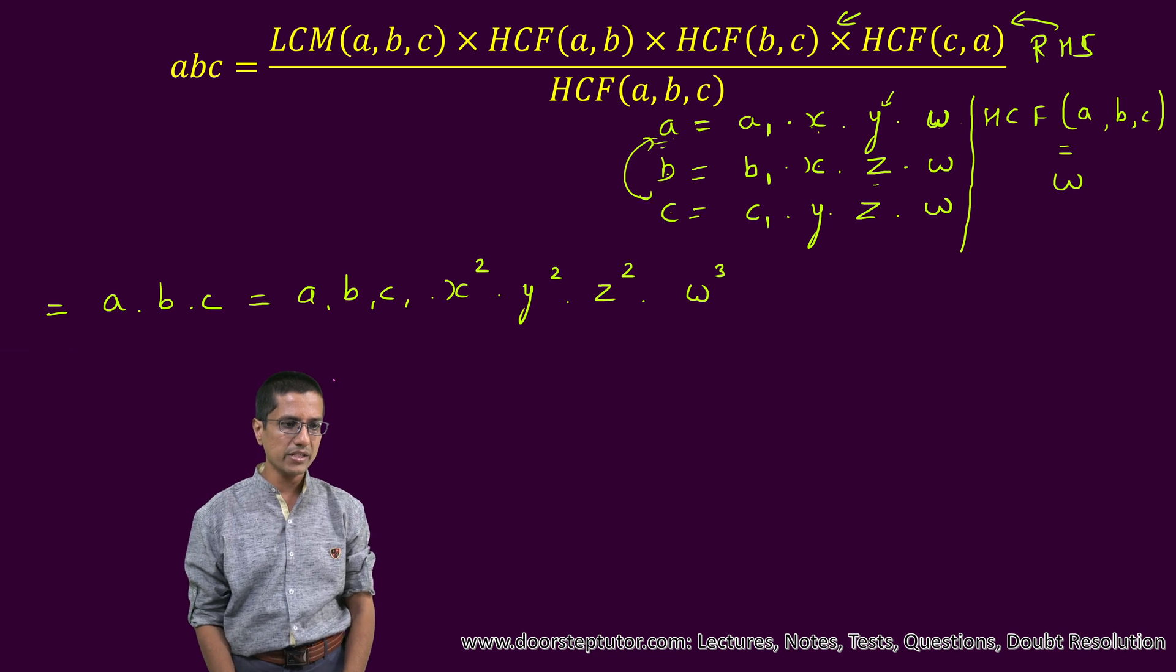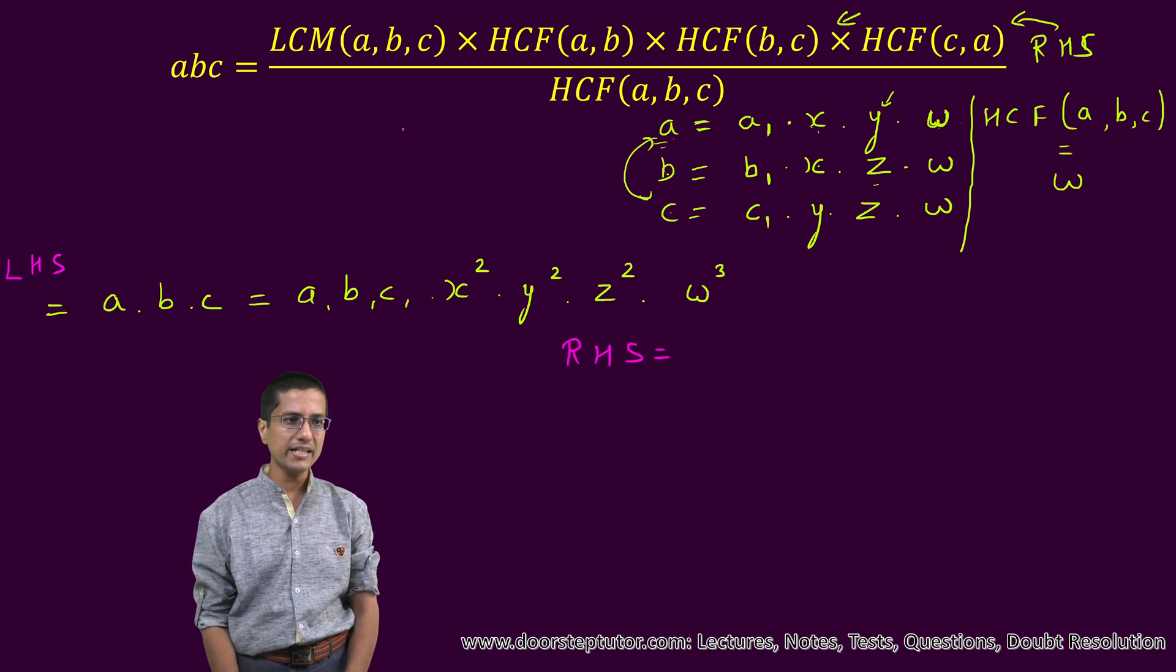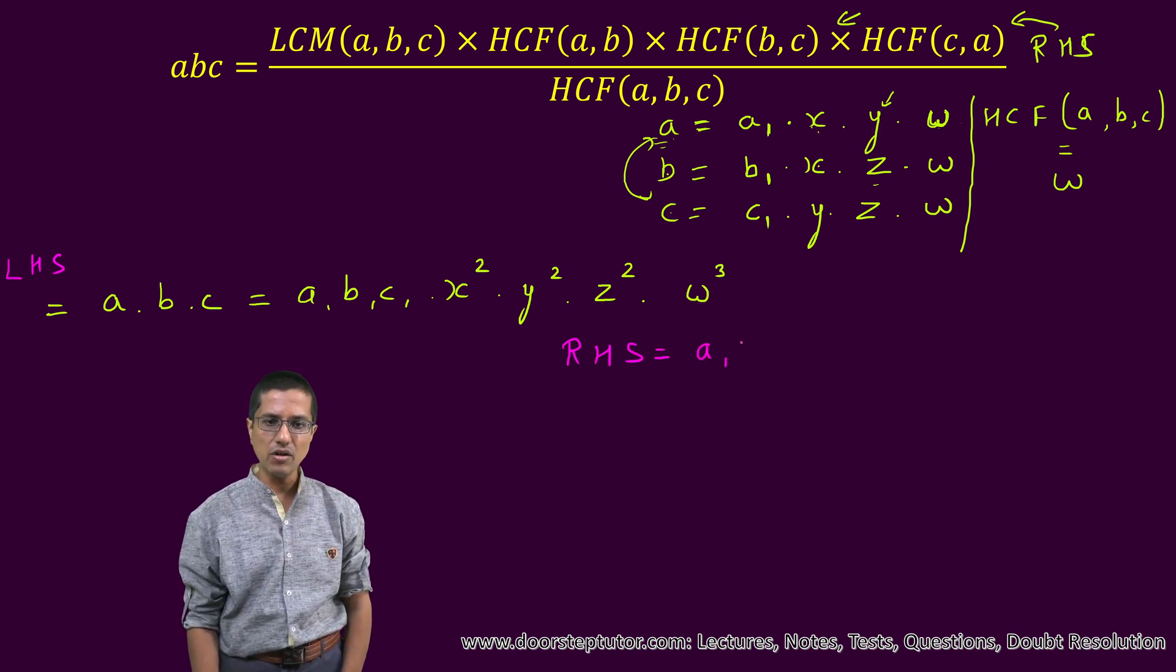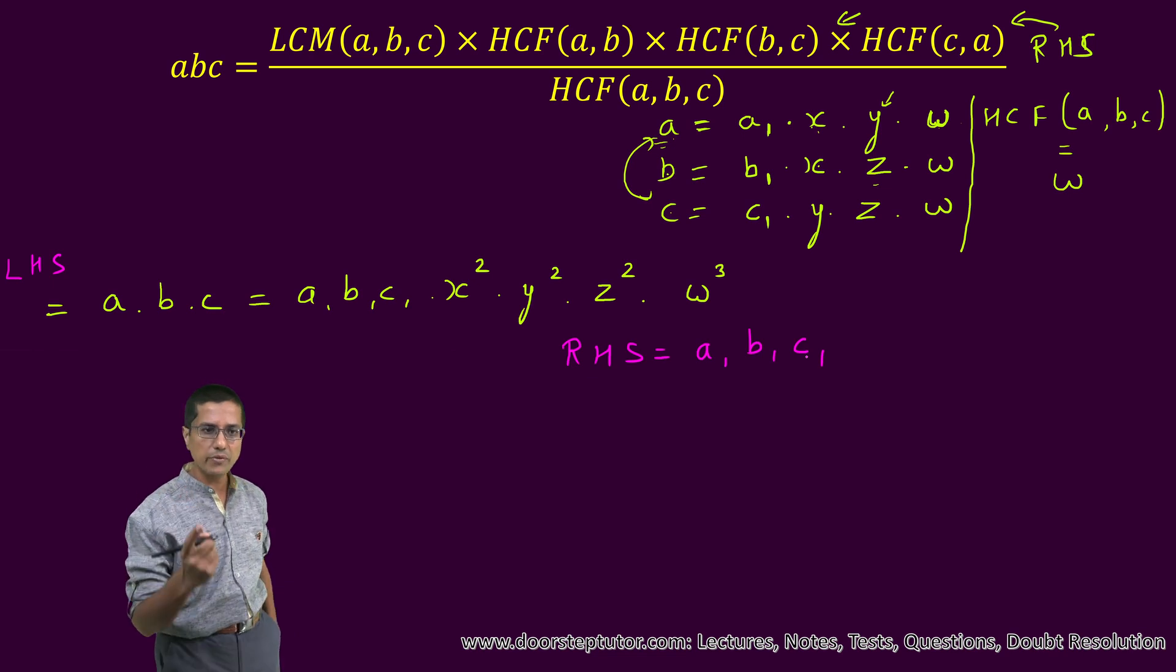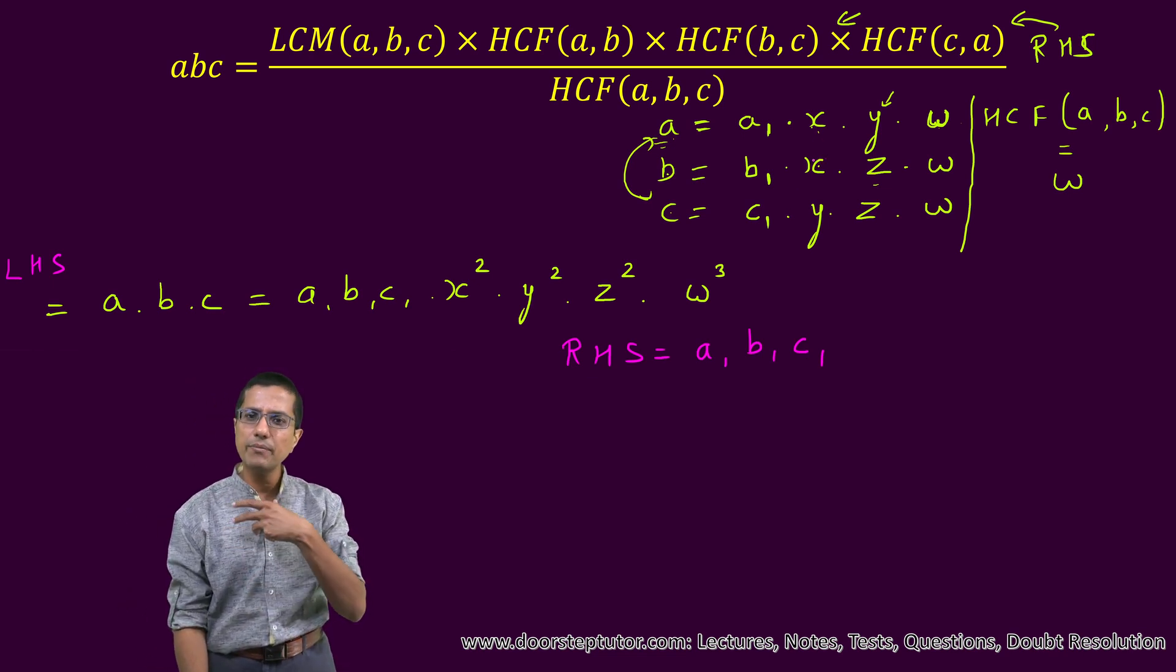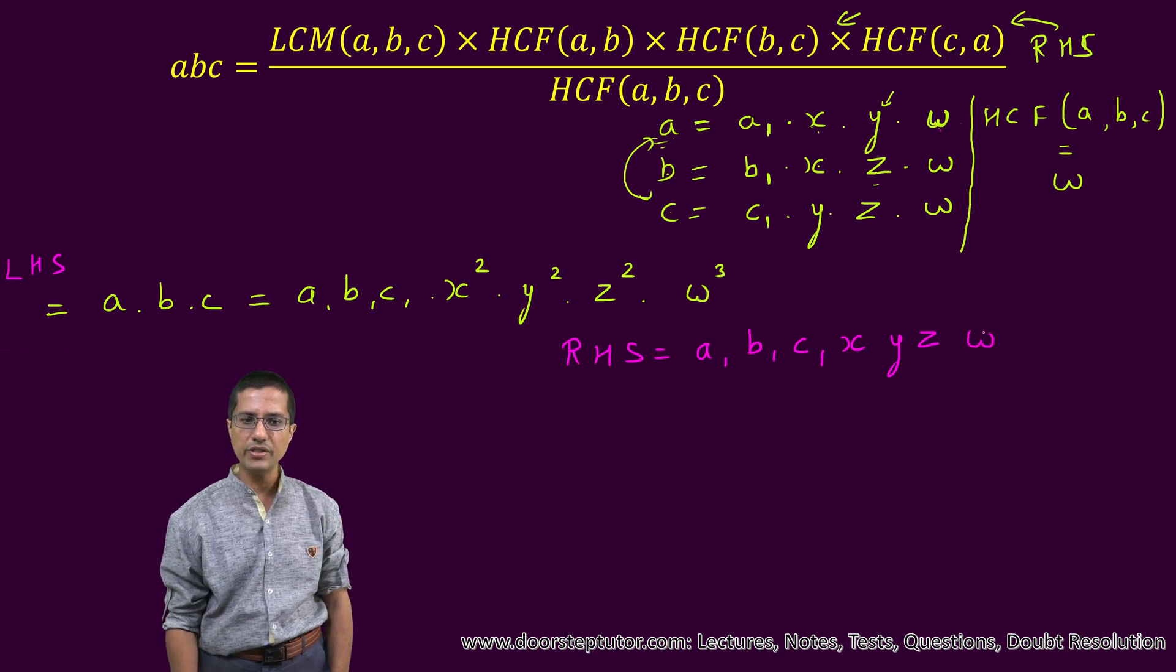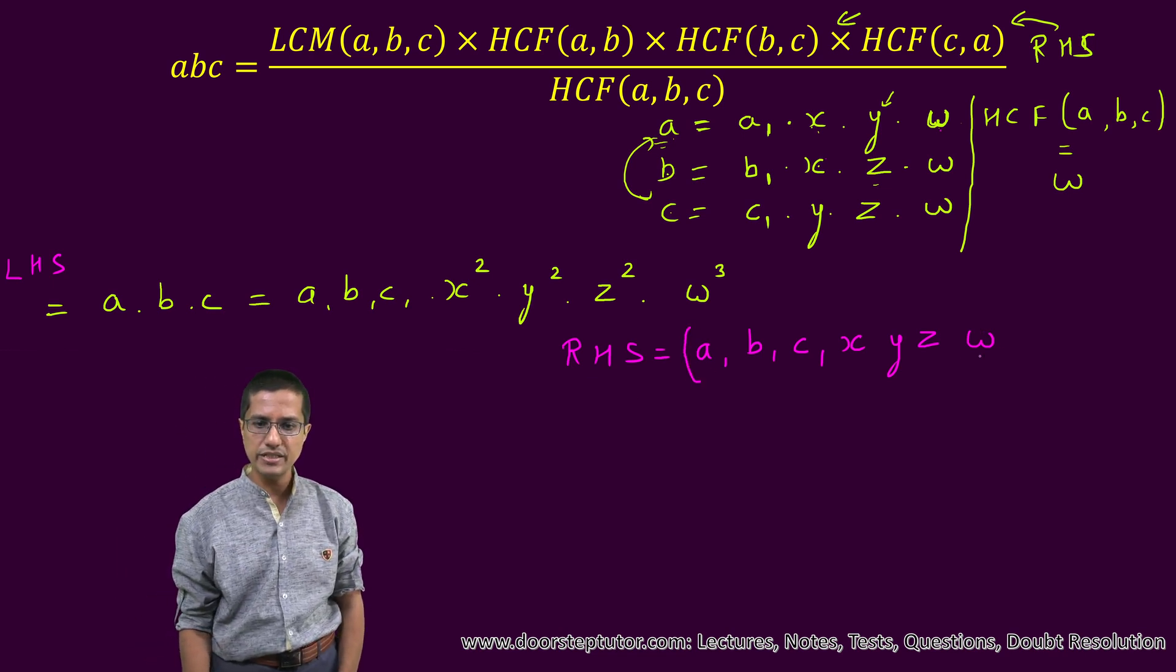What about my right hand side? Let's compute the right hand side. Right hand side is the LCM of ABC. LCM of ABC means that it has all possible factors listed here with the common factors only being taken once. If there was this X and X, we will not take them twice, we will only take them once. So this will be X, Y and Z. And then of these W, we will only take them once. So that is what the LCM actually means. This is the term with the LCM.